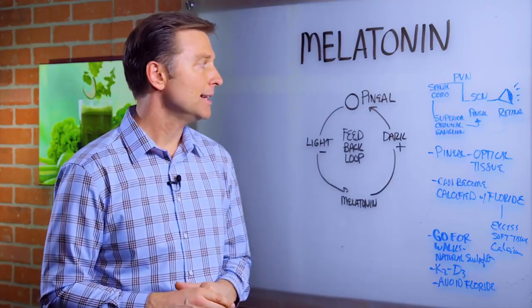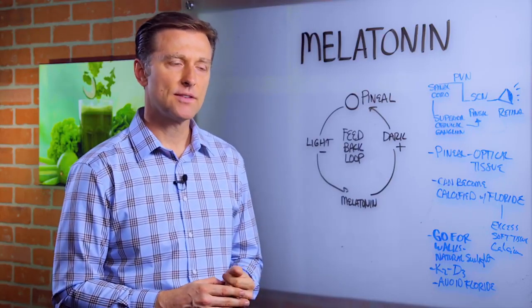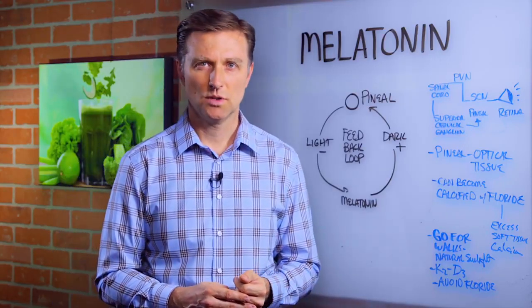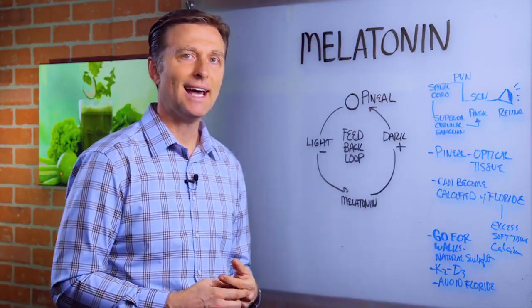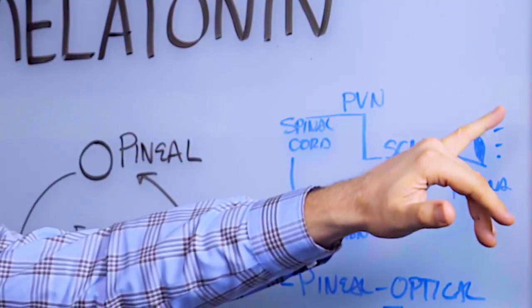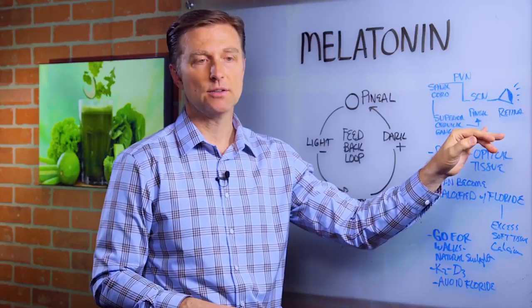Number one, the pineal gland inside the brain is an interesting gland because it contains optical tissue, like eye tissue. So it has receptors for light. There's a whole pathway where light enters the eye and it goes through a series of reactions that then end up in the pineal gland right here.